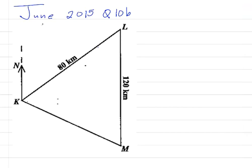Remember, the bearing of 40 degrees is the bearing of L from K. So I'm taking the bearing of L from K, so at K I could draw my north-south-east-west line. Let us put in that angle that represents the bearing of L from K. This bearing is measured clockwise starting from north. So I'm going to start from north and come around to the line that connects L and K. This angle here is 040 degrees, and that is the bearing of L from K.